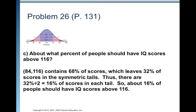So thus there are 32 percent divided by two. So 16 percent of scores in each tail. So about 16 percent of people should have IQ scores above 116.